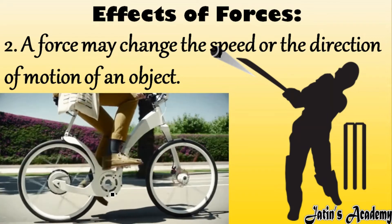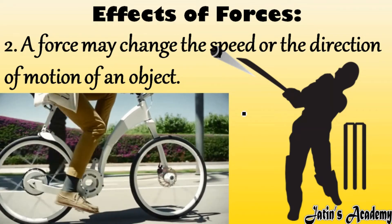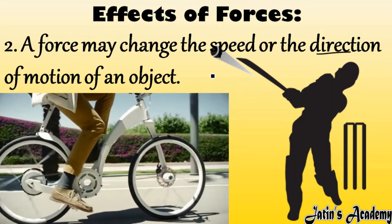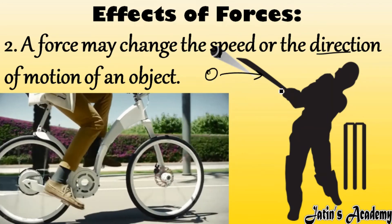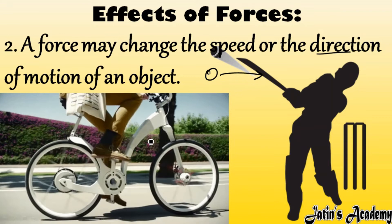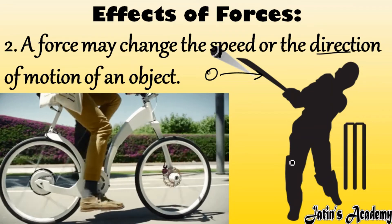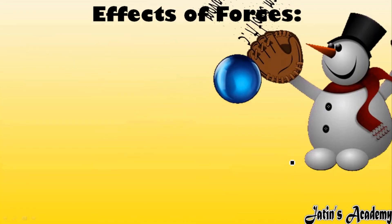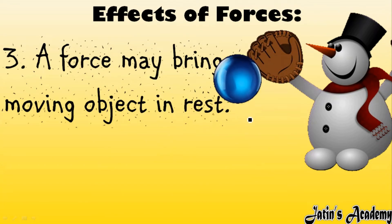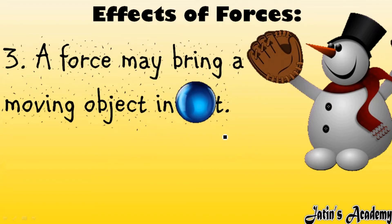If we apply force on the pedals of a bicycle, the force can change the speed of the cycle — less force means less speed, more force means more speed. A force can also change direction. For example, a ball coming towards a batsman: when the batsman hits the ball and applies force, the ball changes its direction. So by applying force we can change both speed and direction of motion.